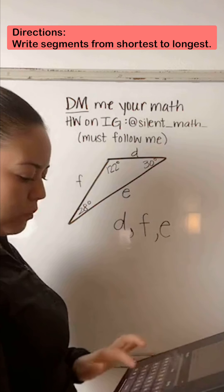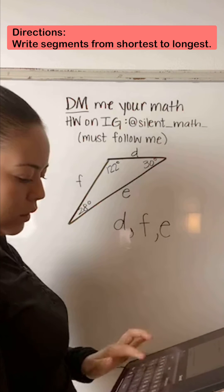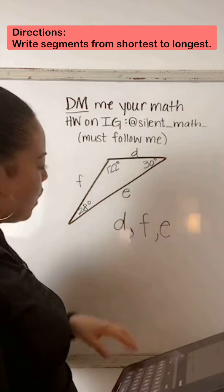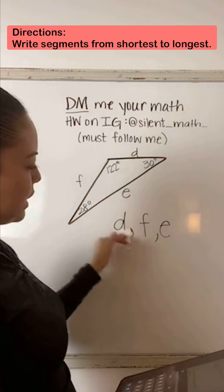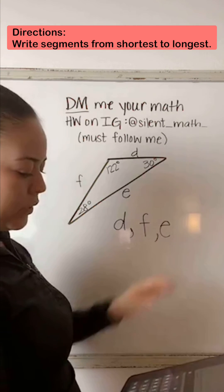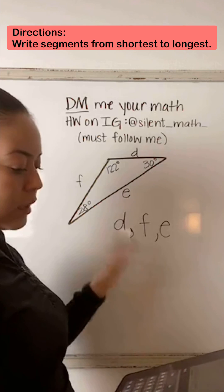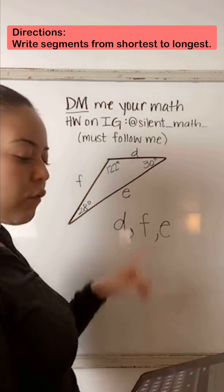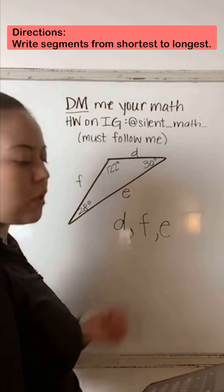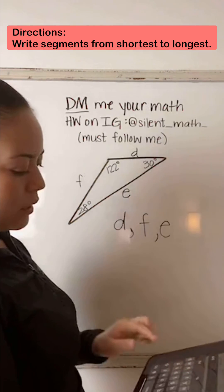So for question B, we're going to say D, F, E is the order in which the side lengths are from shortest to longest.